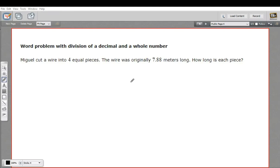Here we have a word problem that requires dividing a decimal. It says Miguel cut a wire into four equal pieces. When you cut something into four equal pieces, you're dividing by four. So we're going to be dividing something by four.